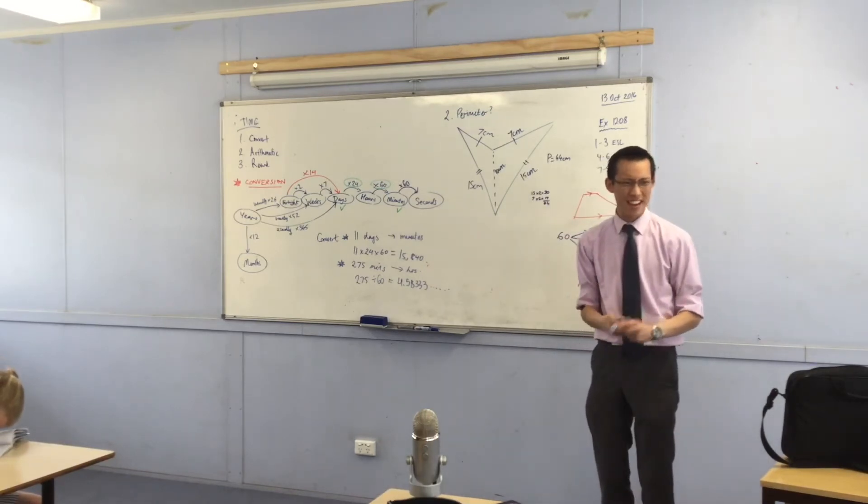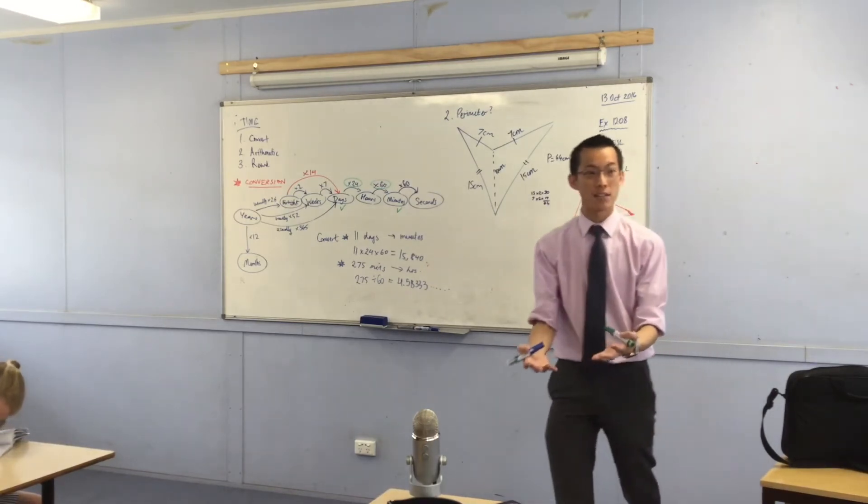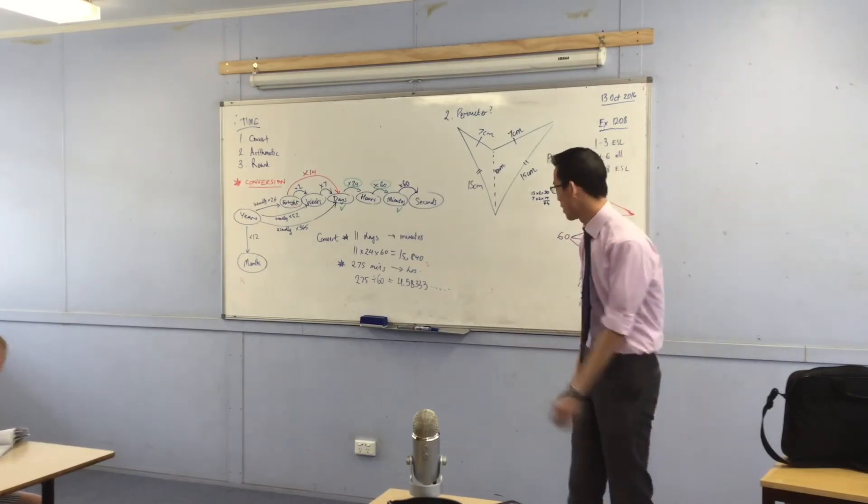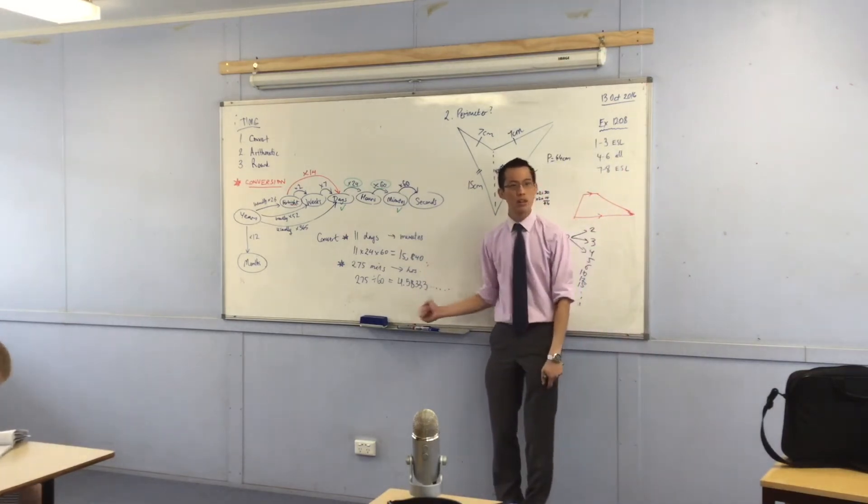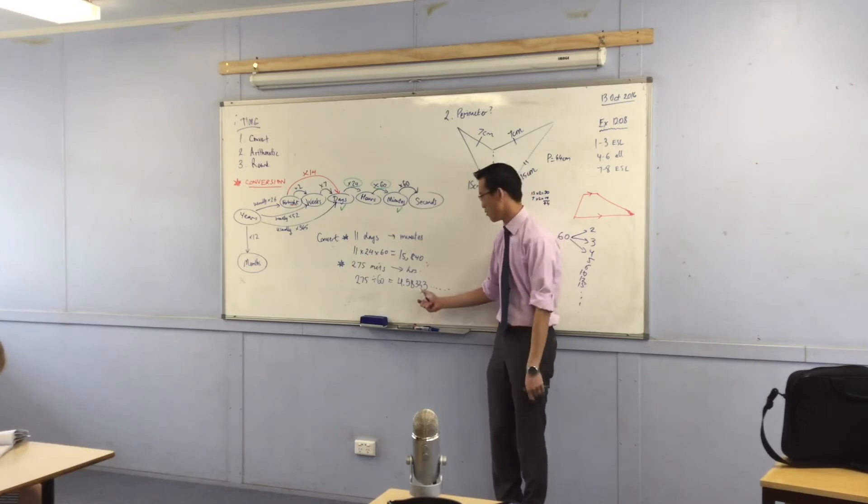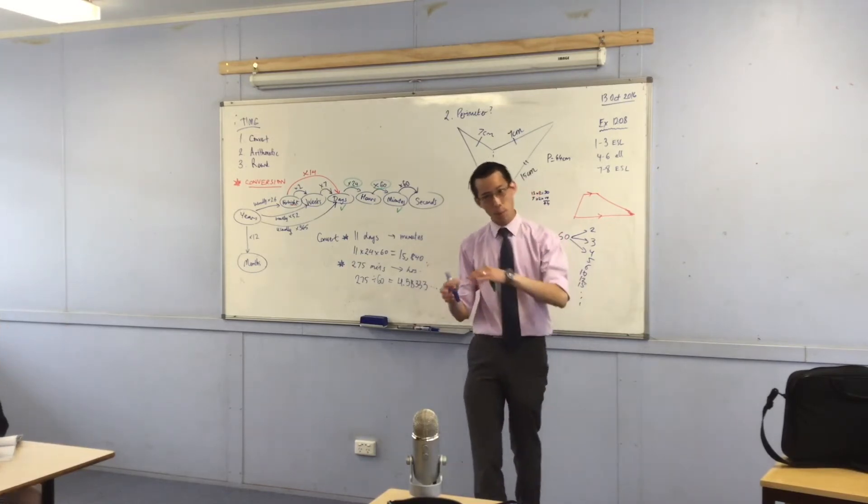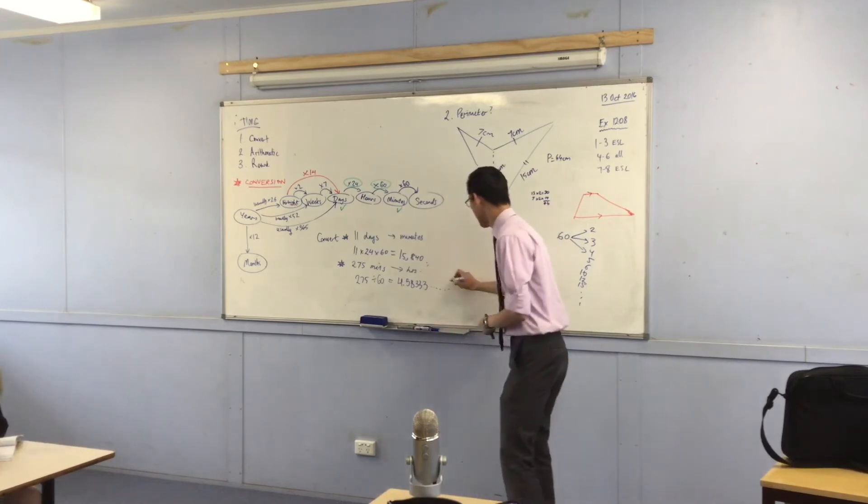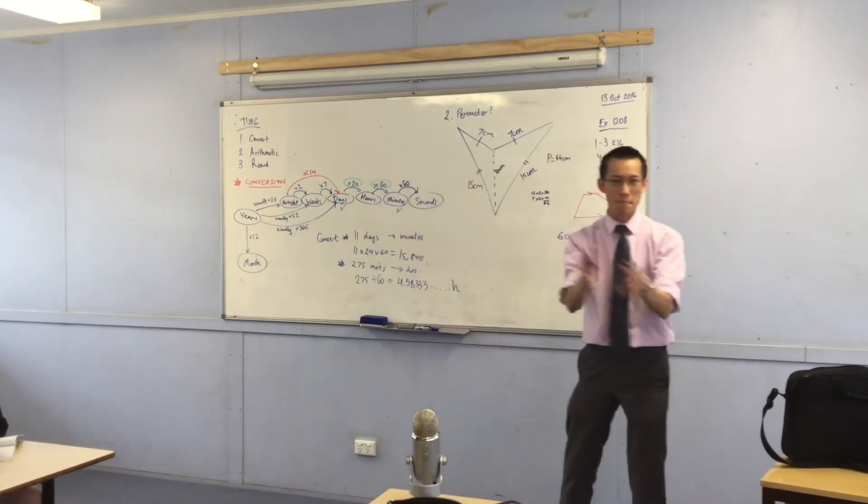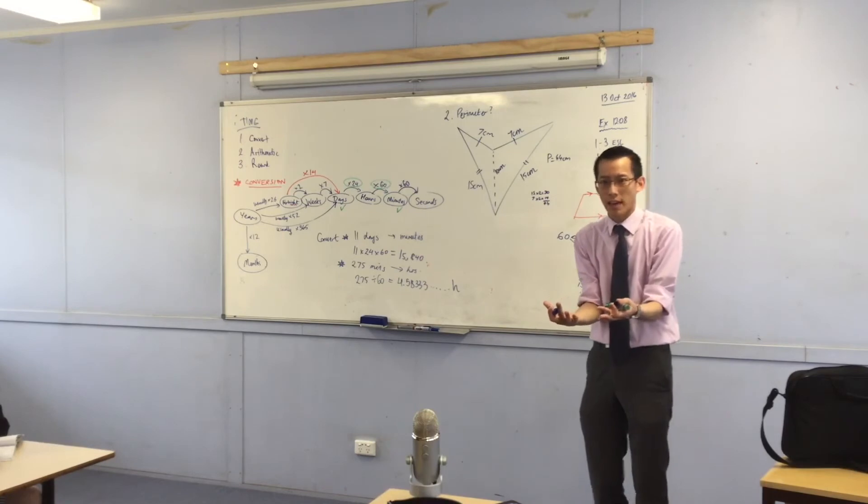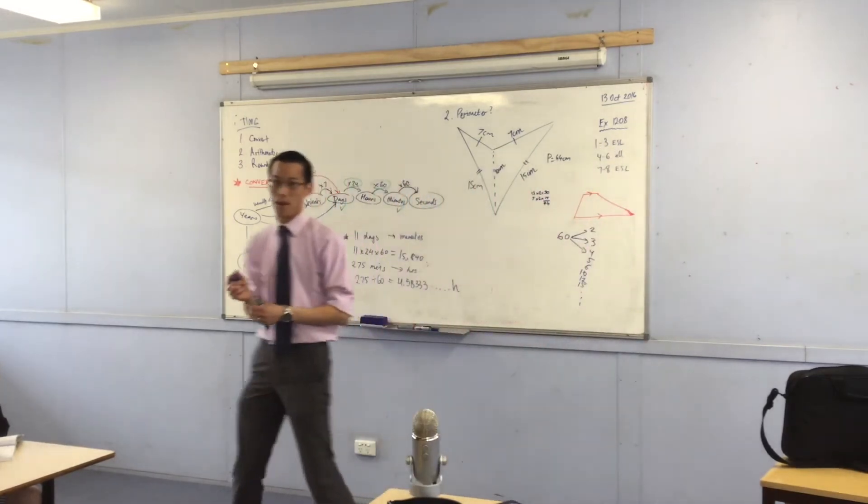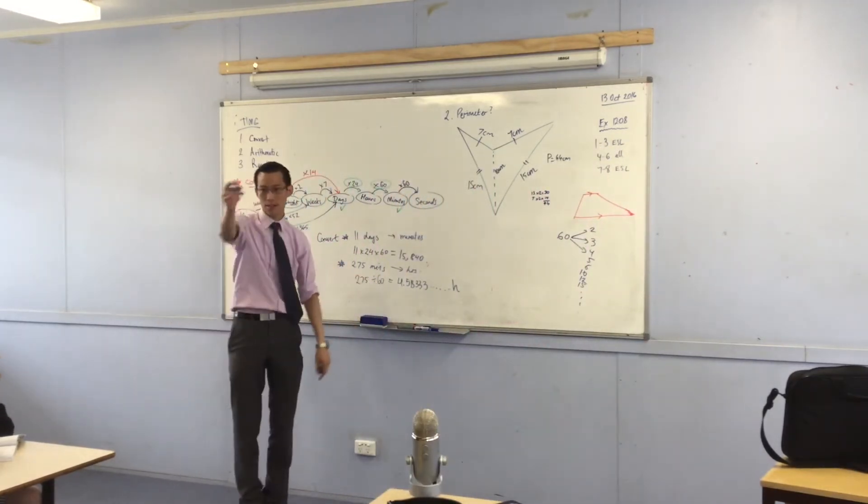Now, in normal language, if I said to you how many hours is it going to take to do X, right? No one talks in decimal when they describe time, right? Well, very few people, right? So I don't like this. I don't want it in four point whatever hours. I want this in hours and minutes. That's a normal way to do this. So how am I going to convert this extra bit into minutes?